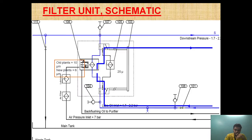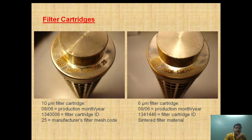Now, as you can see, this is the filter unit through which the oil is passing. Old plants mainly used to have filtration of 10 micron, but new plants have been further upgraded and supplied with a 6-micron filter. As you can see here, this is the 10-micron filter, and this is the 6-micron filter.